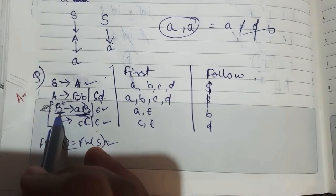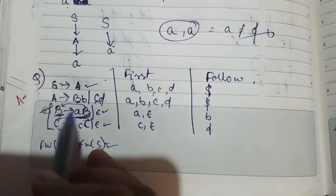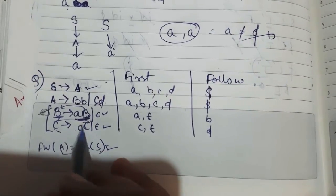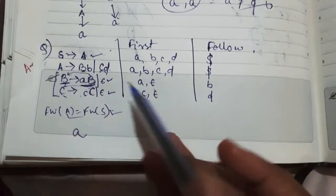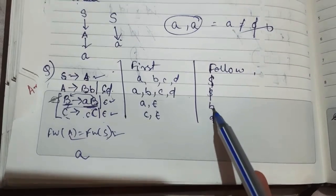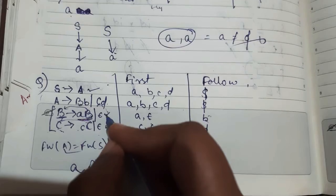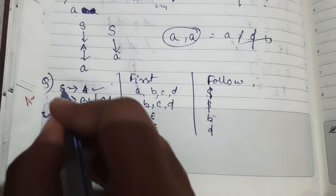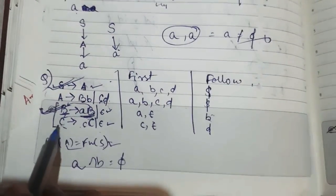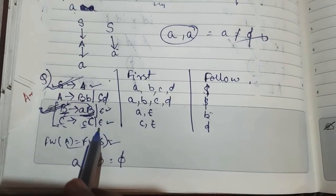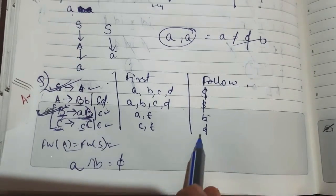So first of this is A and follow of B is B. Intersection equals phi, therefore this production is also LL1. Next, similarly here first is C and follow of C is D. C and D intersection equals phi, this is also LL1.